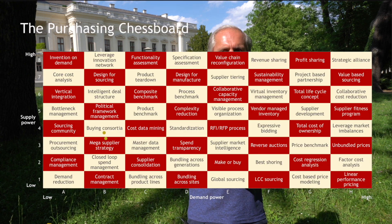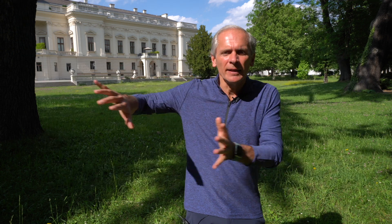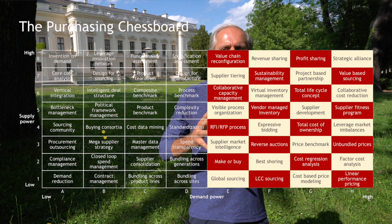The instant purchasing chessboard has the objective of making it really simple, easy to understand, and to deliver quick results. Here is how you do that. First, we forget about the entire left half of the purchasing chessboard. You only really can do fast things if you enjoy decent and above average demand power. Working in the area of low demand power always is time consuming, so let's focus on the right half.